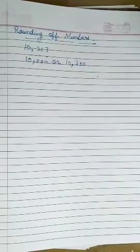Big numbers can be rounded off to the nearest thousand, nearest hundred or any specified place. Let us take an example.